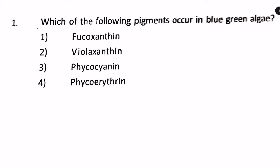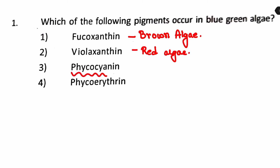Which of the following pigments occur in blue-green algae? The options are Fucoxanthin, Paraxanthin, Phycocyanin, and Phycoerythrin. Fucoxanthin is a brown pigment found in brown algae. Fucoxanthin is mainly found in red algae to some extent but it is not in blue-green algae. Phycocyanin is found in blue-green algae and Phycoerythrin is found in red algae. So our answer is number 3.